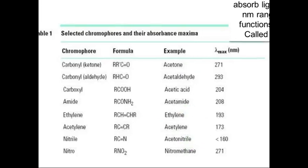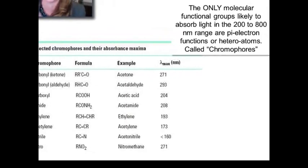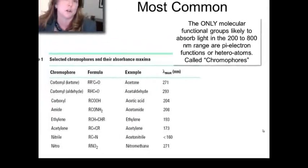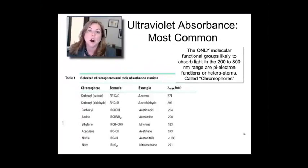The only molecular functional groups that are likely to give rise to a strong absorption between 200 and 800 nanometers are pretty much going to be pi to pi star transitions or heteroatom functionalities. These are called chromophores. They're pieces of molecules because that piece contributes to the electronic structure that you're detecting with the optical spectroscopy.